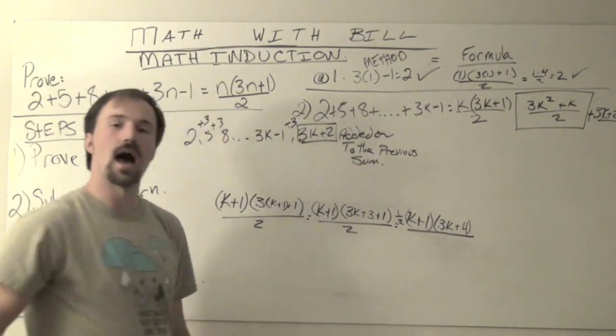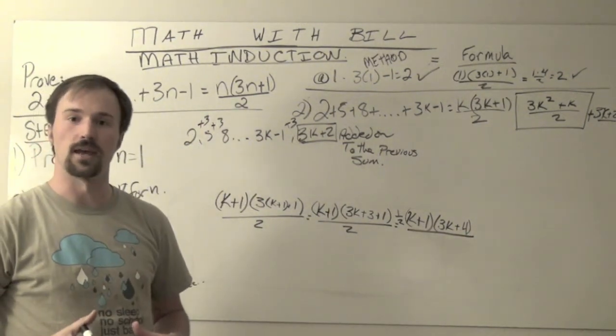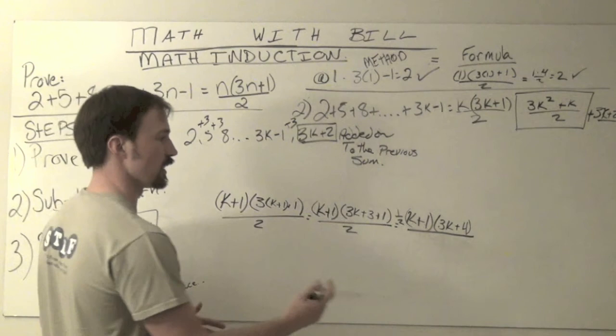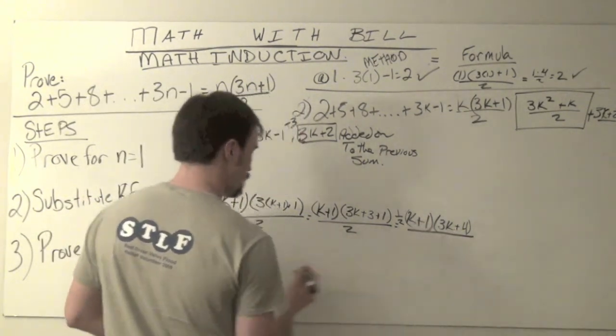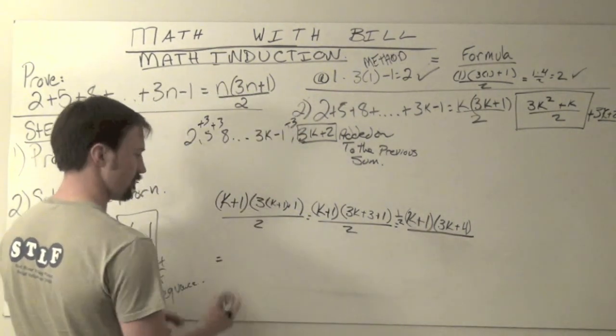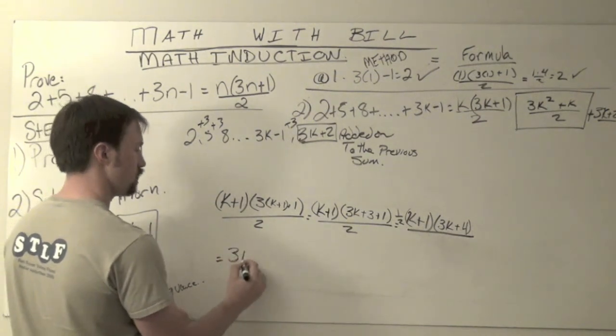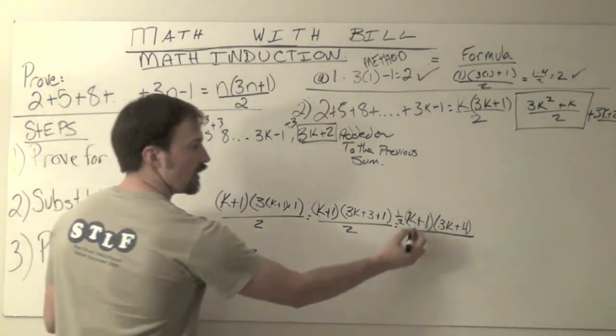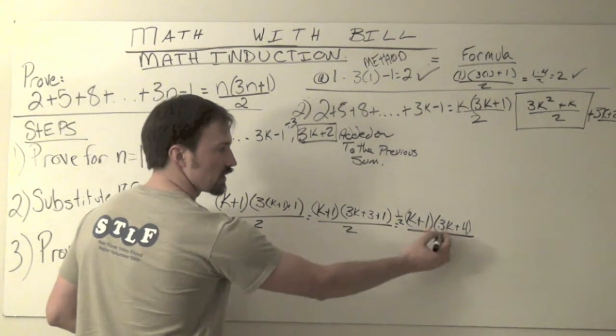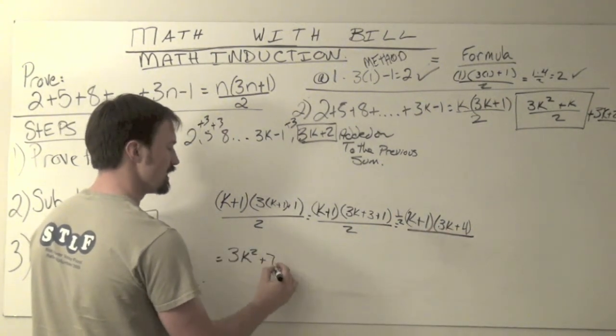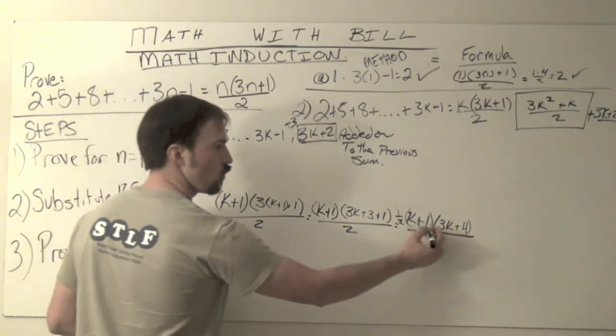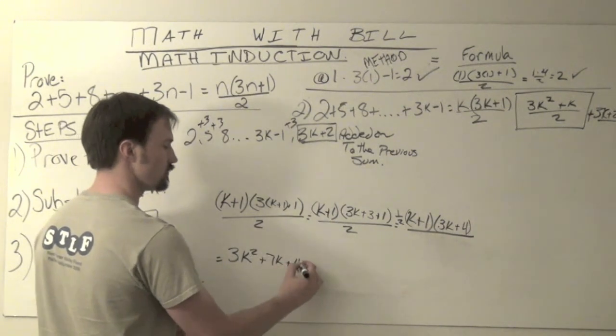At this point, I'm going to multiply that binomial together. And what that's going to do for me is this. K times my 3k is going to give me, and I'm moving down here now, 3k squared. K times 4 is 4k plus another 3k gives me 7k. And 1 times 4 gives me my plus 4.